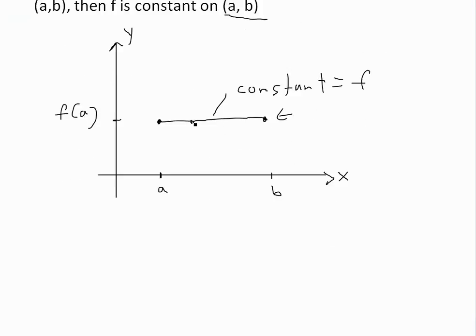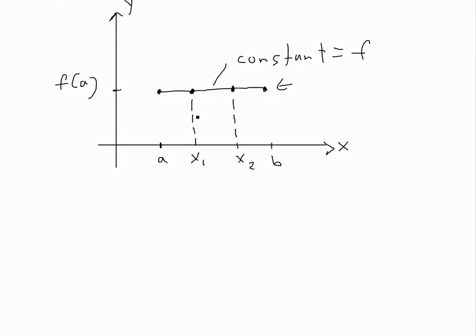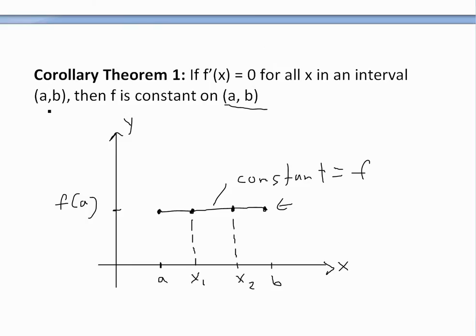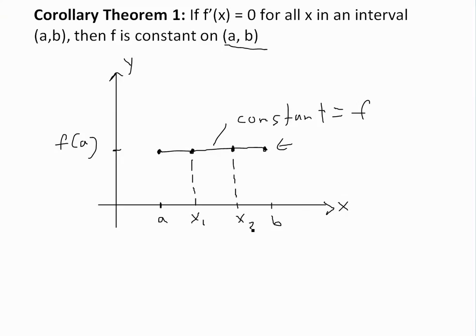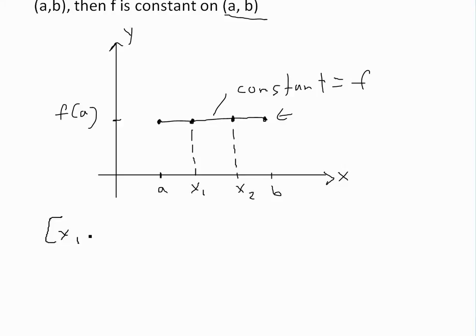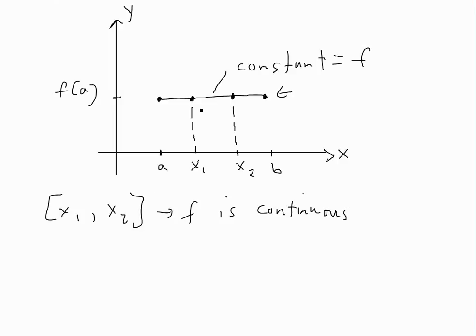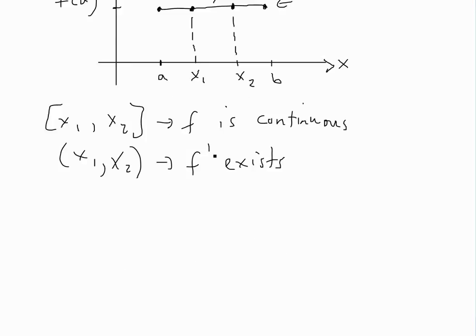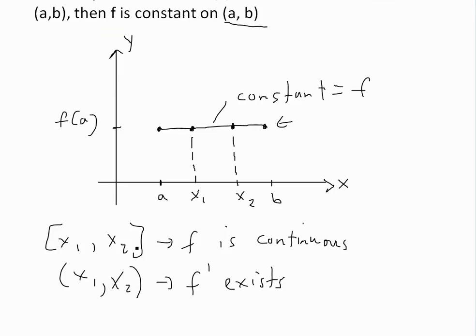At this point, because this is an open interval (a, b), f does not have to exist at the endpoints, but inside it does. So from x1 to x2, that's a closed interval where f exists and is continuous at every point. We're also given the derivative is zero everywhere. So in the open interval (x1, x2), the derivative exists. Open just means it doesn't have to be true at the endpoints.